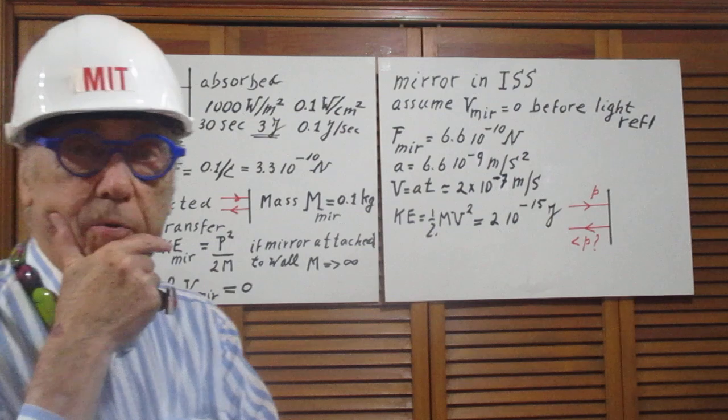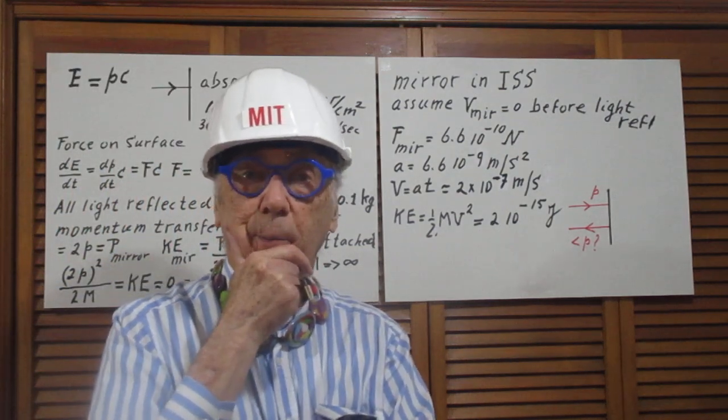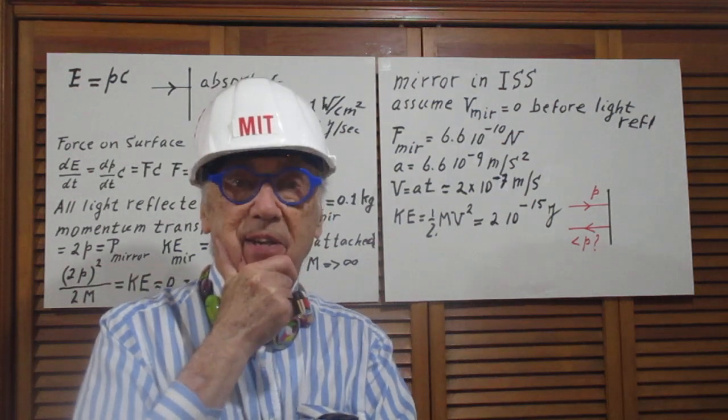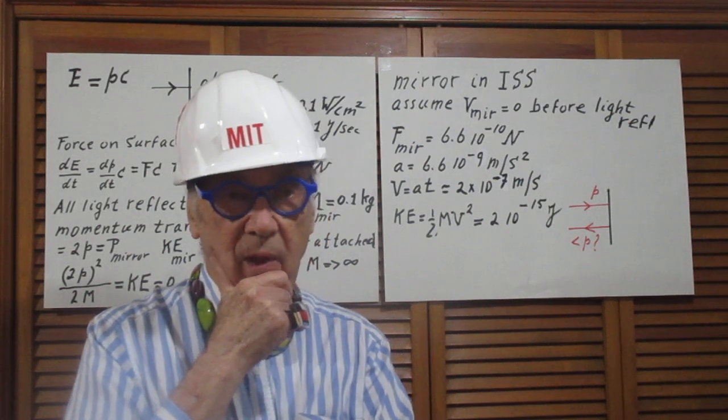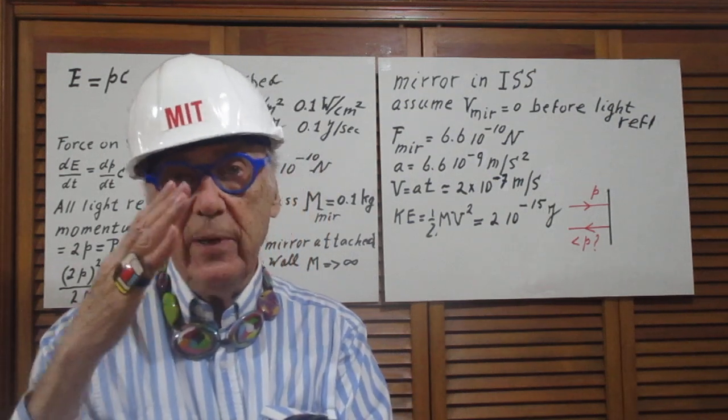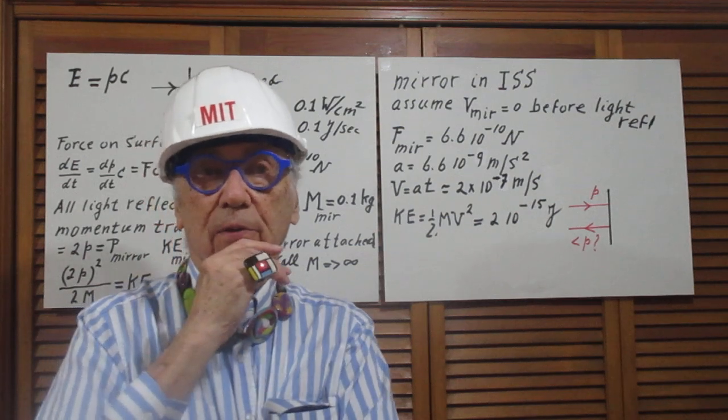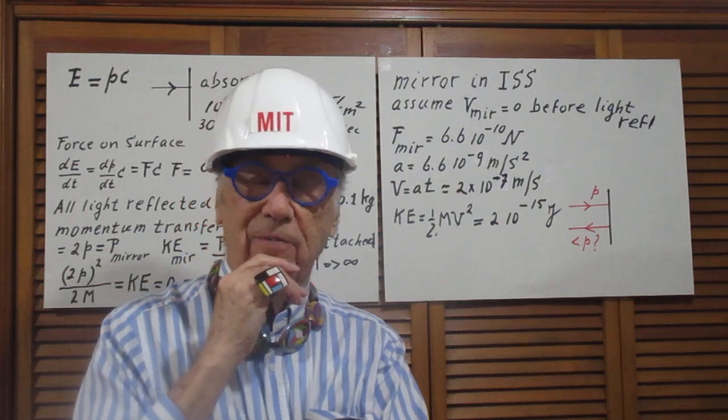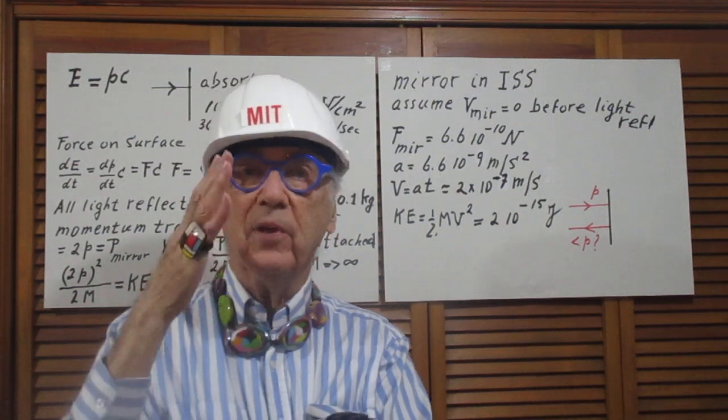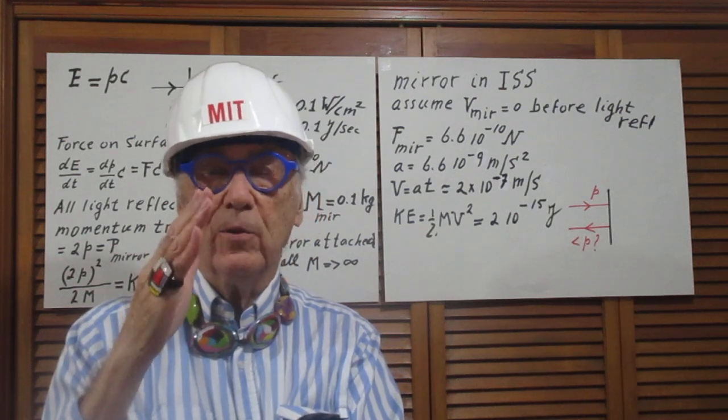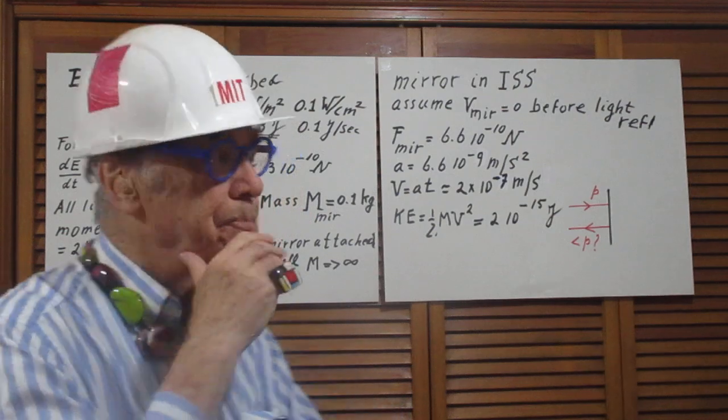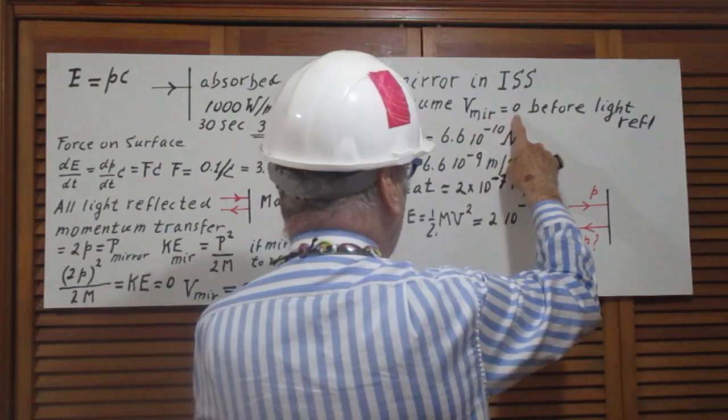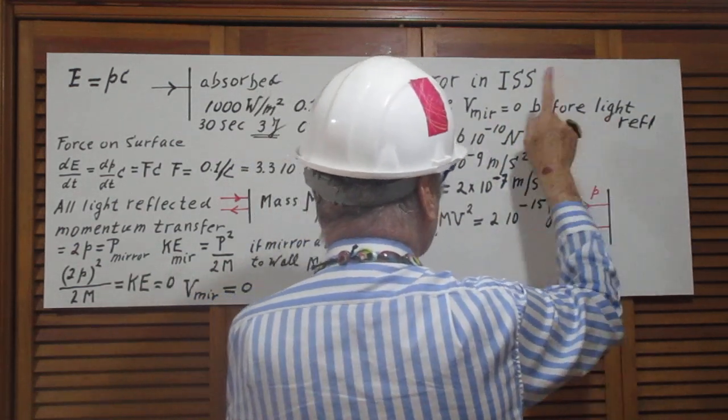This is quite intuitive. But let us now assume that the mirror is in the International Space Station. It would be okay if it had a constant speed, a constant velocity relative to the space station, but let us not make things unnecessarily difficult. Let us just assume that in the reference frame of the International Space Station that mirror stands still. So we assume that the speed of the mirror before the light reflects is zero.